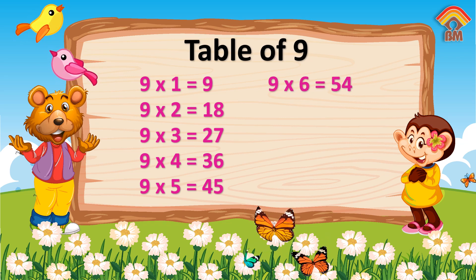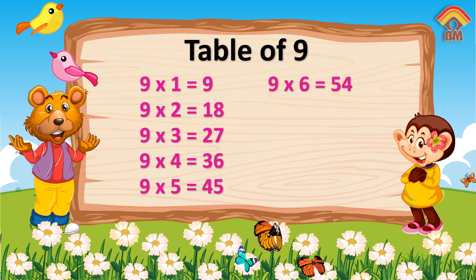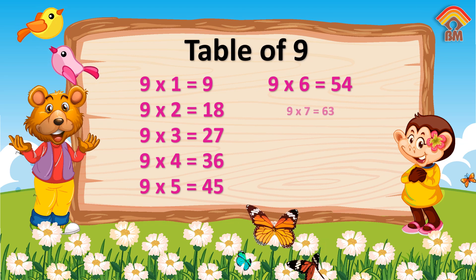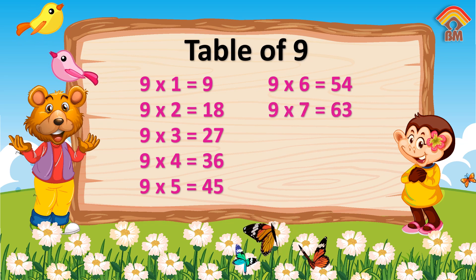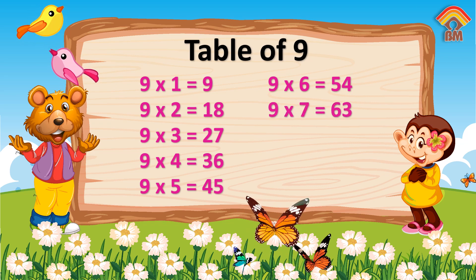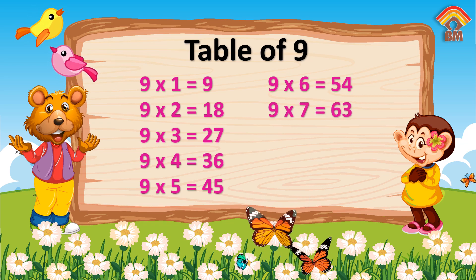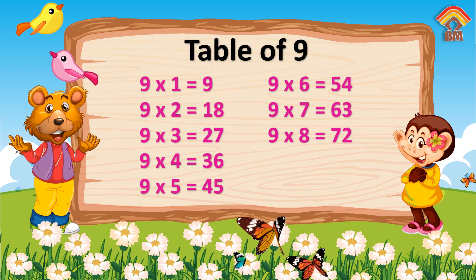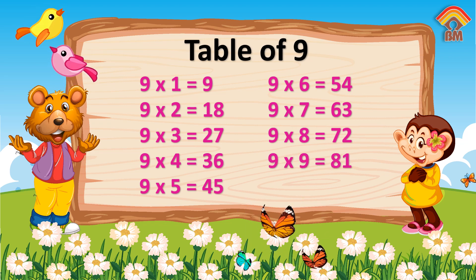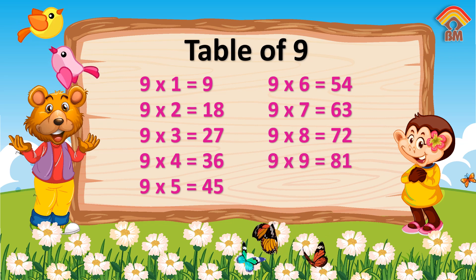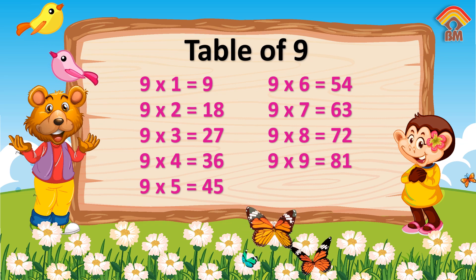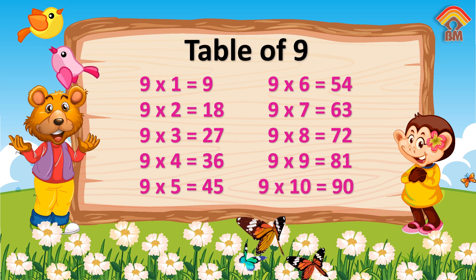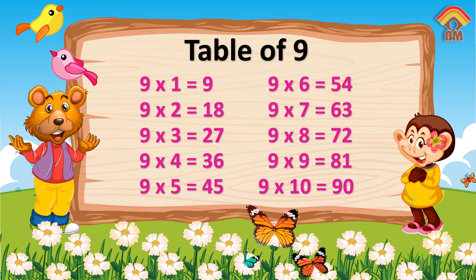Nine sixes are fifty-four. Nine sevens are sixty-three. Nine eights are seventy-two. Nine nines are eighty-one. Nine tens are ninety.